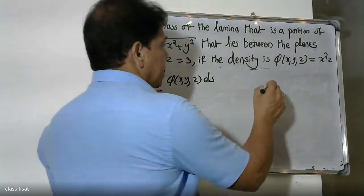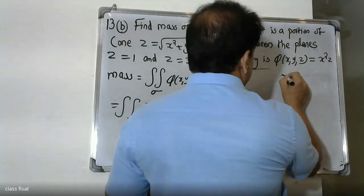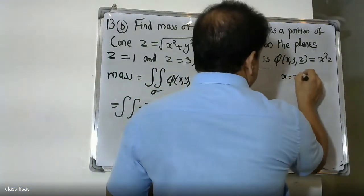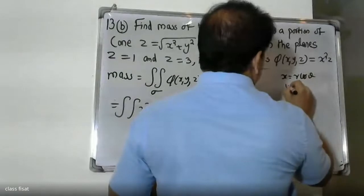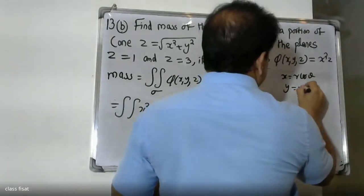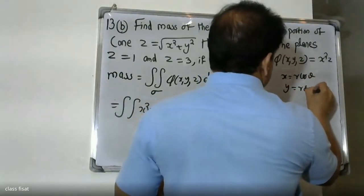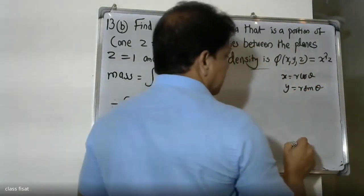Using polar coordinates: x = r cosθ and y = r sinθ.